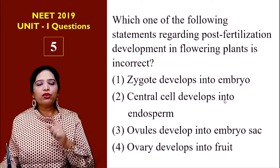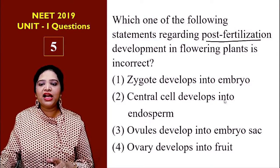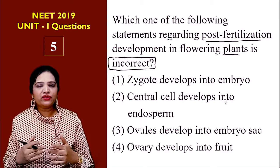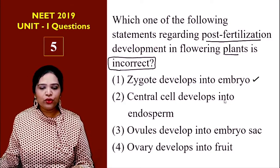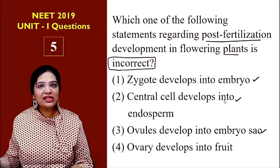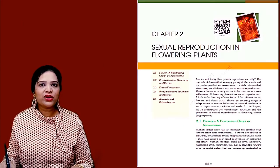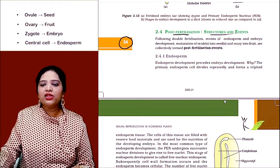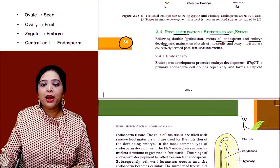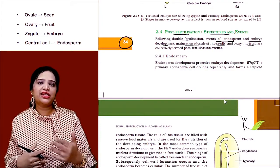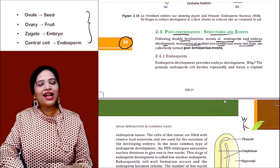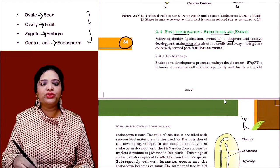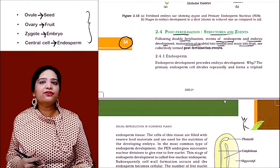Question number 5: which of the following statements regarding post-fertilization development in flowering plants is incorrect? The options are: zygote develops into embryo; central cell develops into endosperm; ovules develop into embryo sac; or ovary develops into fruit. This question is again from Sexual Reproduction in Flowering Plants, page numbers 34 and 35 — post-fertilization events. Following double fertilization: endosperm and embryo develop, ovule matures into seed, and ovary into fruit. So after fertilization: ovule becomes seed, ovary becomes fruit, zygote becomes embryo, and the central cell develops into endosperm.